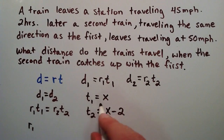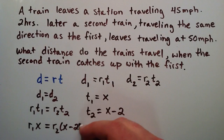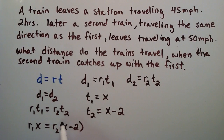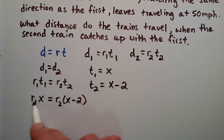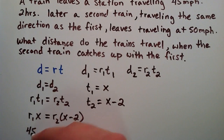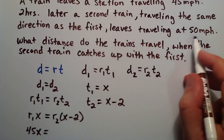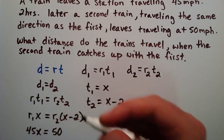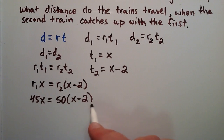Now we replace the t's in the equation. This becomes r1 times x equals r2 times (x minus 2). Be careful to use parentheses since we're multiplying r by the entire quantity of t. Plugging in the rates: train 1 was traveling at 45 miles per hour and train 2 at 50 miles per hour, giving us 45x equals 50(x minus 2).